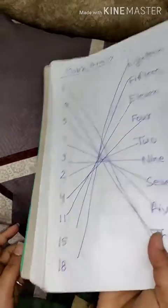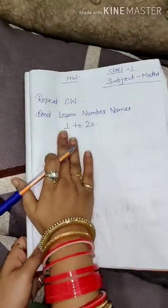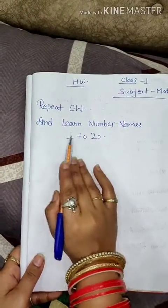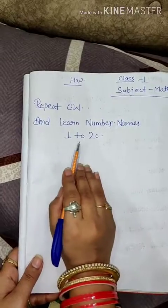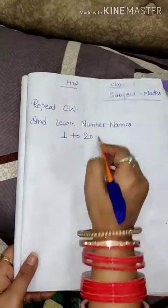So, turn the page. This is your homework: repeat classwork and learn number names for 1 to 20. That's it.